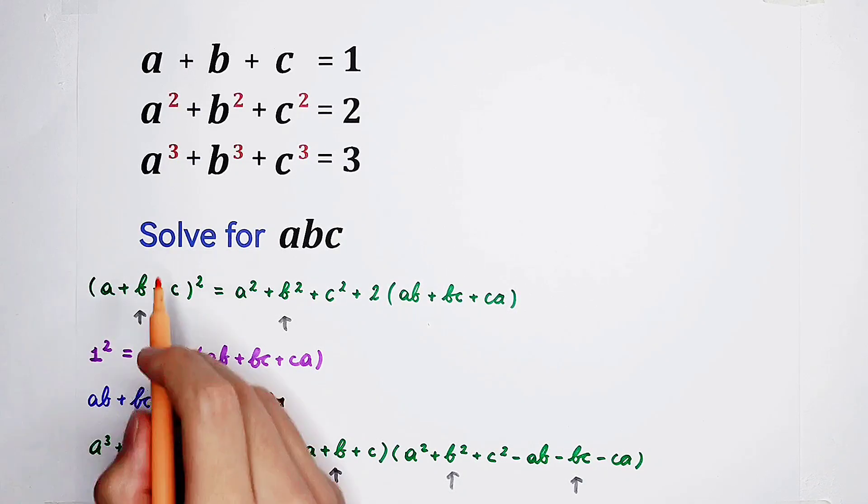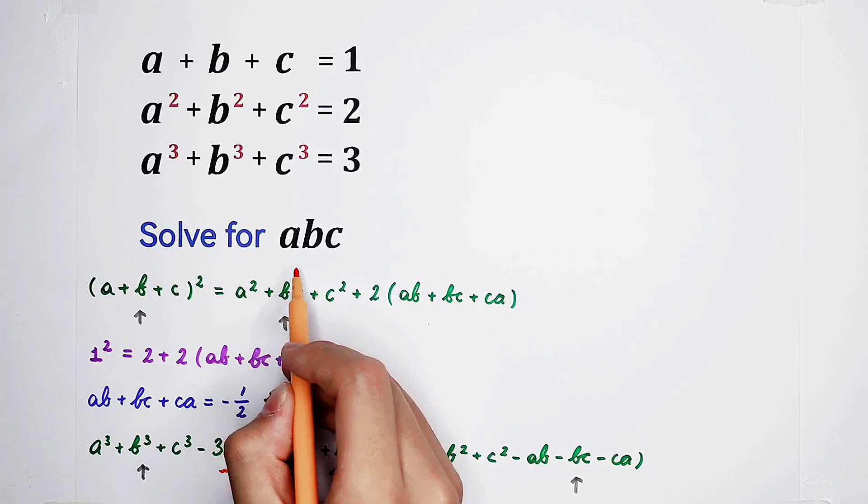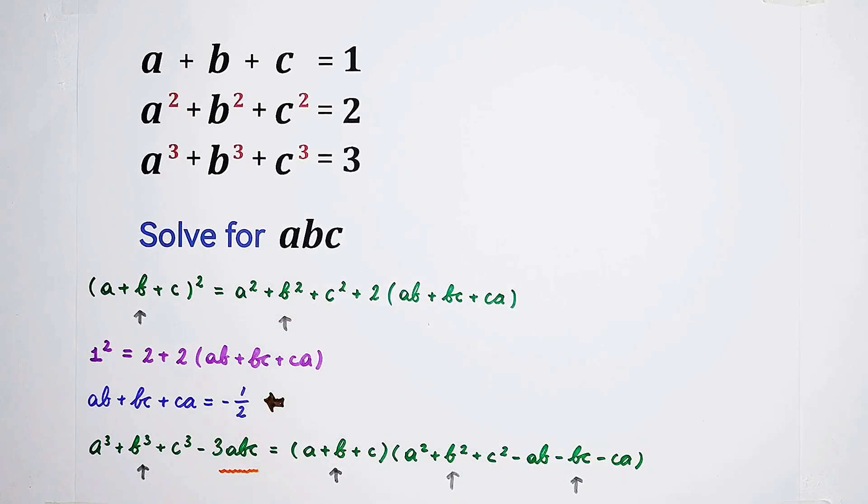However, we are going to solve for the value of a times b times c. So, it's a good chance, isn't it? So, I'm going to tell you that this formula is very, very important. It is a very famous formula, actually factorization. So, actually, for this question, this is the main line, the main formula, the main equation.